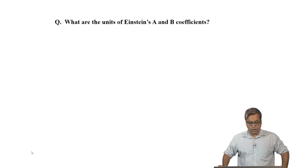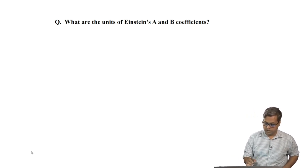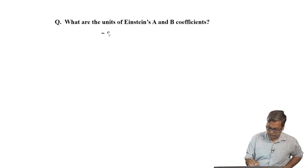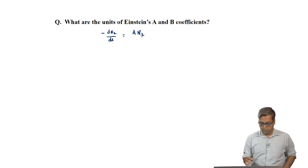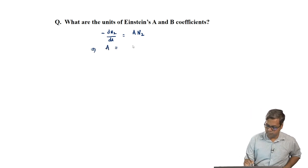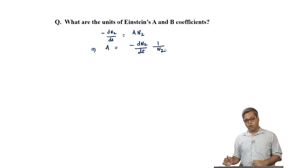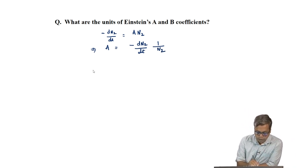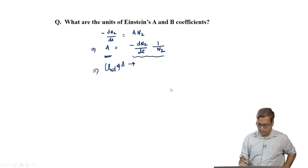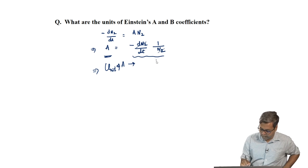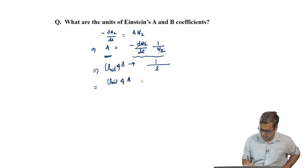We will solve a couple of problems. The first question is: what are the units of Einstein's A and B coefficients? For Einstein's A coefficient, we write minus dN2/dt equals A·N2 for spontaneous emission. From this, A equals (minus dN2/dt) times (1/N2). Since N2 and dN2 are numbers, they cancel out, and the unit of A is 1 divided by the unit of time, that is, inverse seconds (s⁻¹).